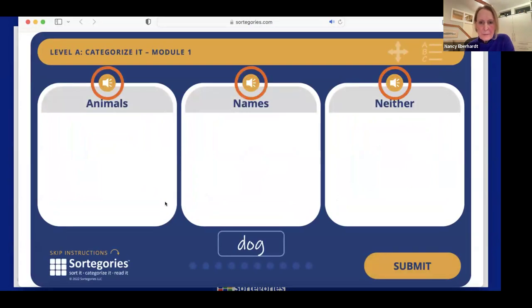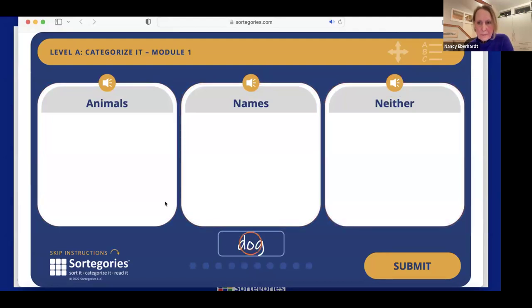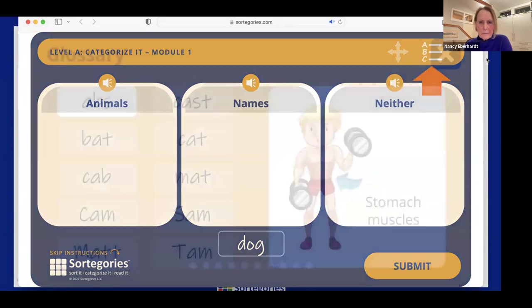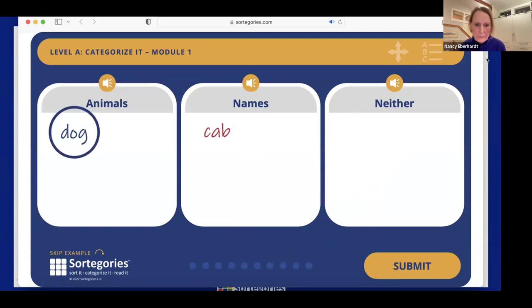First, an important question, dogs or cats? So in our product, Sortagories, we have a motivator throughout and we have to choose a dog or cat to make this work. So I'm going to choose a dog. First, select the audio icons to listen to each category, animals, names, and neither. Then drag the words that appear here to the correct category. At any time, you may move words from one category to another. When no more words appear, click submit to check your answer. You can use this icon at the top to view an example. Or use the glossary icon to see pictures and meanings for the words in this activity.